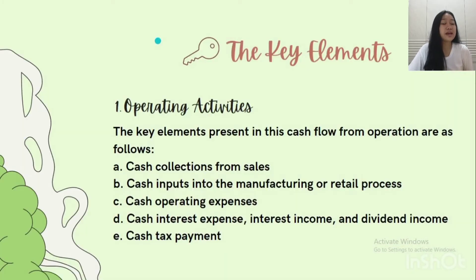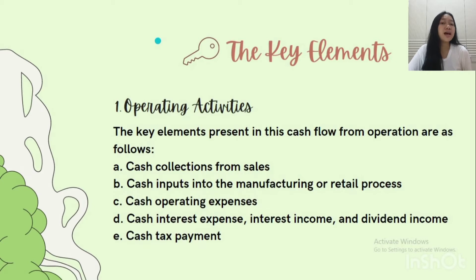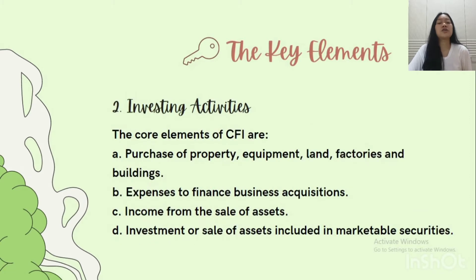These activities also have key elements. In the operating activities, the key elements present in cash flow from operations are: cash collection from sales, cash inputs into the manufacturing or retail process, cash operating expenses, cash interest expense, interest income, dividend income, and cash tax payment.